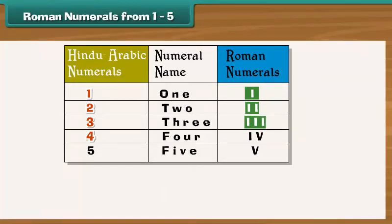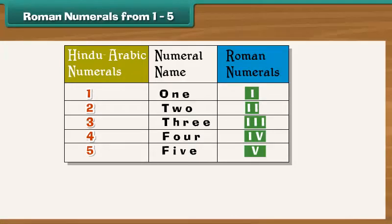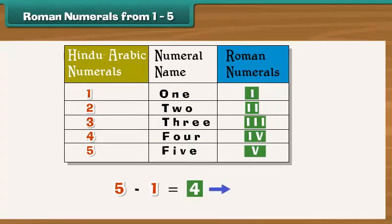4 and 5 are written slightly differently, as IV and V. As you have seen, V represents the numeral 5. 4 is 5 minus 1, hence it is expressed as IV.